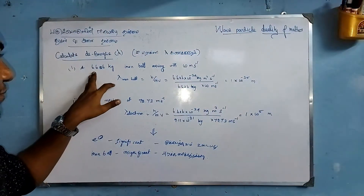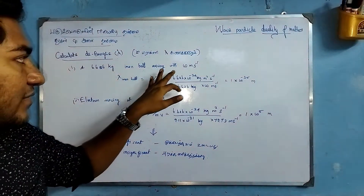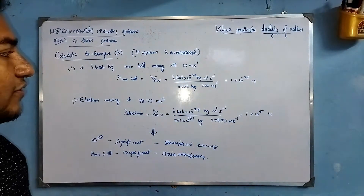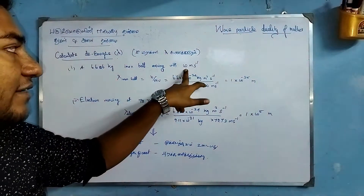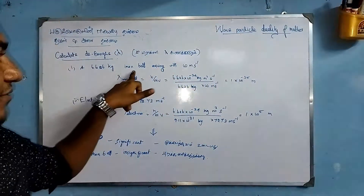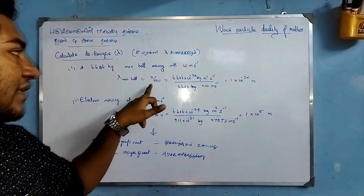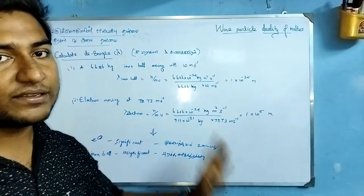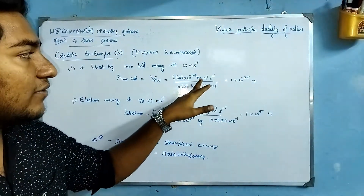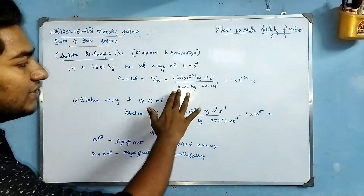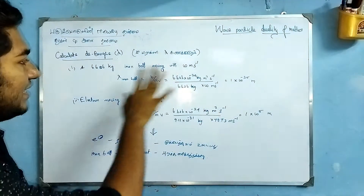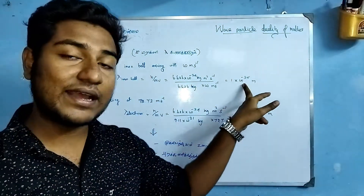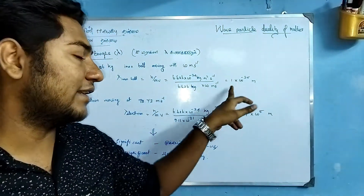The first question: a 6.626 kg iron ball is moving with a velocity of 10 meters per second. What is the de Broglie wavelength? The momentum mv is mass times velocity. We calculate: lambda equals h divided by mv, which is 6.626 times 10 to the power minus 34 joule-seconds, divided by 6.626 kg times 10 meters per second. The result is 10 to the power minus 35 meters. That is a very small value.